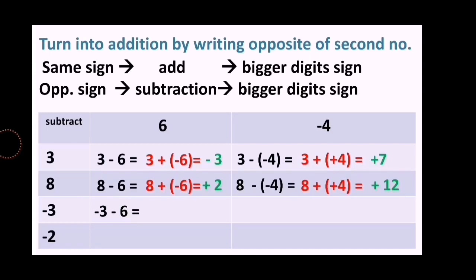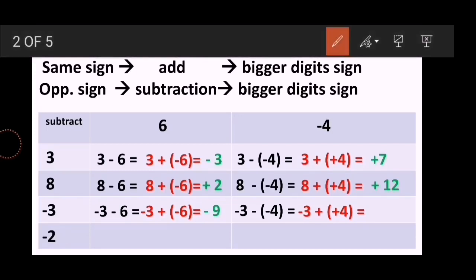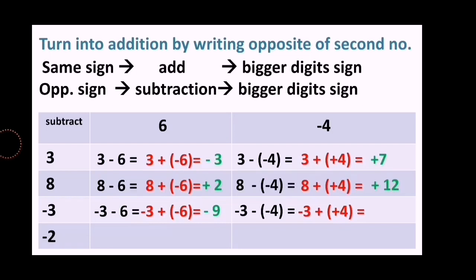The third row is negative 3 minus 6. The subtraction sign means positive 6 is the second number, turned into negative 6. We now have negative 3 and negative 6 - same sign - so we add: 6 plus 3 equals 9, and the bigger digit sign is negative, giving negative 9. For negative 3 minus negative 4: negative 4 is turned to positive 4. With opposite signs, we subtract and the bigger digit positive 4 gives answer positive 1.